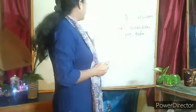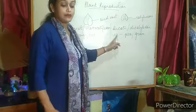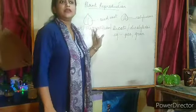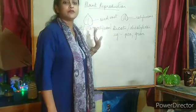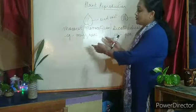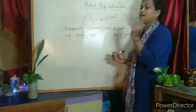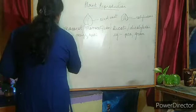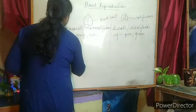Now, seeds are of two types — monocot and dicot. How can we identify or distinguish whether a plant is a monocot or a dicot plant? Simply, if we see the seeds, we will find that monocot will have one cotyledon, and in dicot there will be two cotyledons.